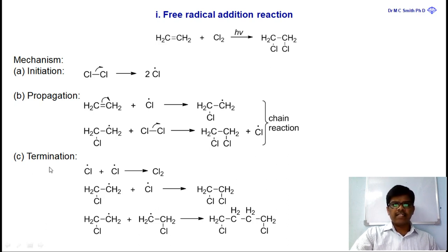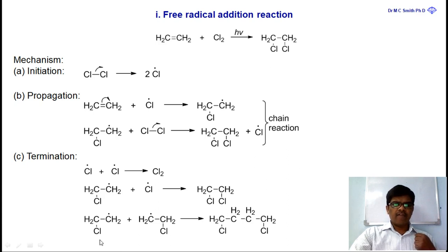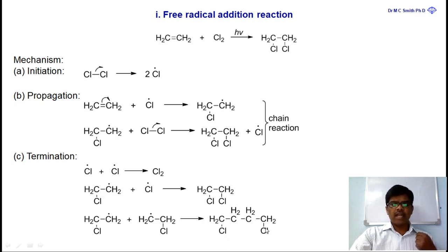At the end of the reaction, there is a termination step where chlorine free radicals may react with each other to regenerate chlorine, or a 1-chloroethyl free radical may react with a chlorine free radical to give 1,2-dichloroethane. Alternatively, two 1-chloroethyl free radicals may combine to give 1,4-dichlorobutane.